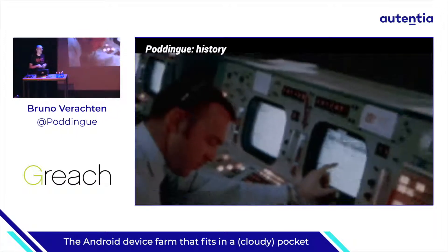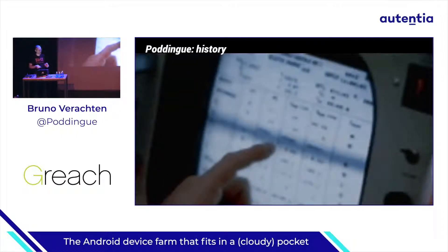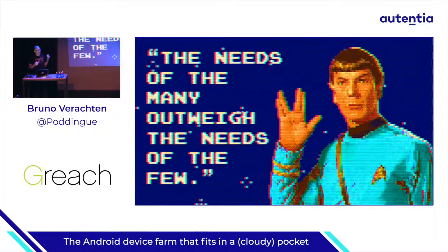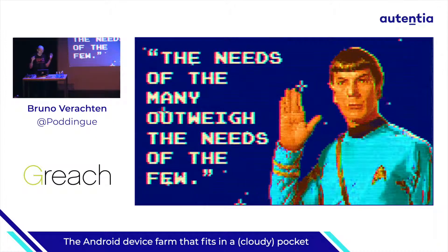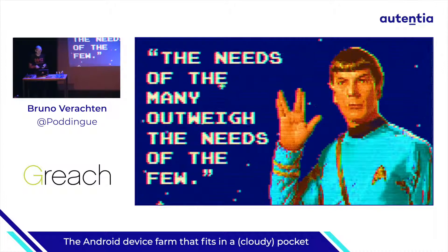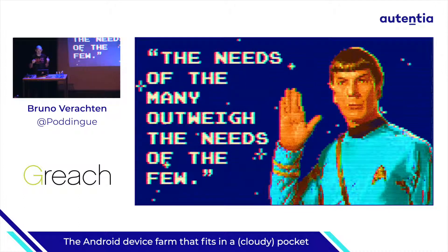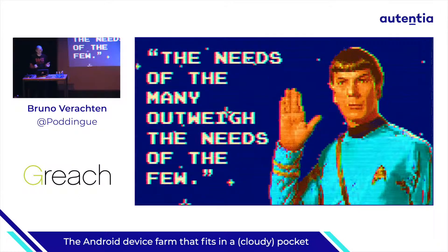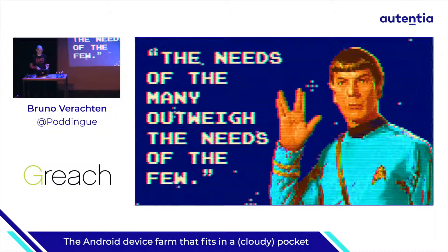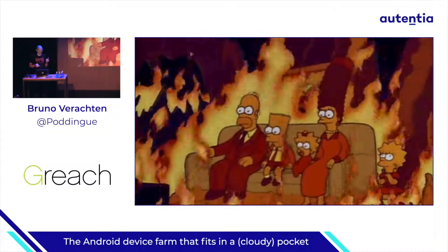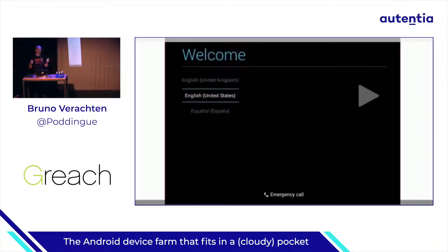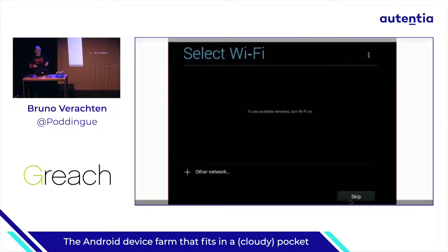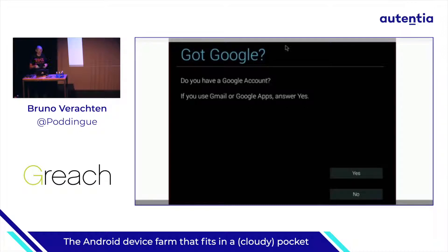In 2013, we were more and more Android developers needing to test our applications in my company. To this day, we have around 500 mobile applications. There were already tools to test, but we had to use our own devices plugged into our laptops or very slow emulators. The real devices were hard to book, disappeared sometimes, and were often outdated. There is one time when testing manually on your own phone is not scalable enough. To tell you the truth, it was hell on earth.